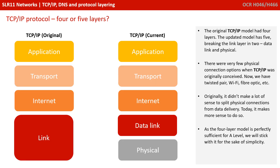Before we dive into the rest of this video, you might hear some people saying the TCP/IP model has five layers. The original TCP/IP model did have four layers; the updated model has five, breaking the link layer into two: data link and physical. There were very few physical connection options when TCP/IP was originally conceived — now we've got twisted pair, Wi-Fi, fibre optic, and many more. Originally it didn't make a lot of sense to split physical connections from data delivery; today it makes a lot more sense. As the four-layer model is perfectly sufficient for A-level exam questions, we're going to stick with it for simplicity.